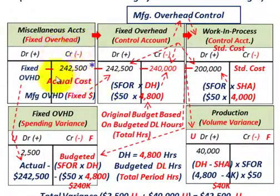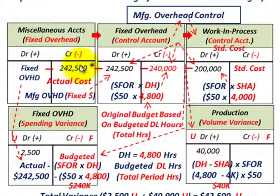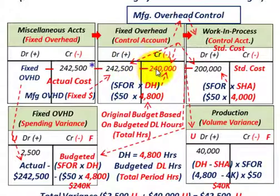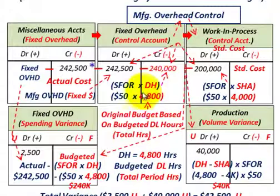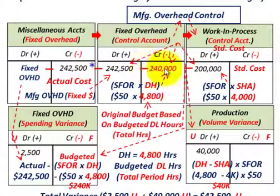Starting with our problem: actual fixed overhead cost for the month is $242,500, and that flows into the manufacturing overhead control account at $242,500. Another key calculation for the volume variance: standard fixed overhead rate of $50 per hour times the denominator hours of 4,800 total budgeted direct labor hours equals $240,000. That's our budgeted fixed overhead amount.